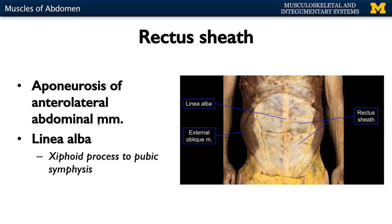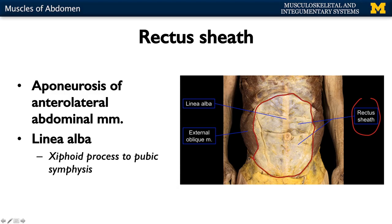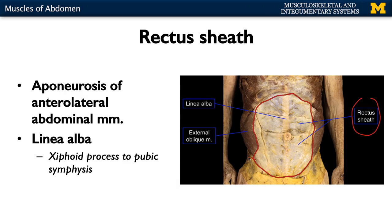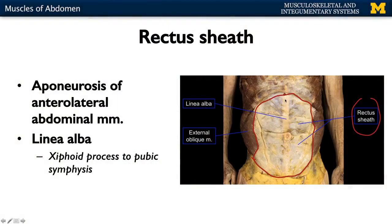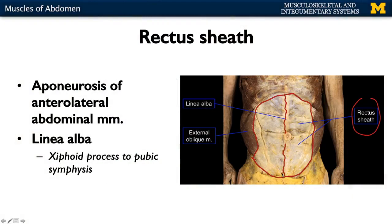All those muscles have tendons associated with them, and those tendons coalesce anteriorly into the very thick, very important rectus sheath. All the white portions you see here are components of your rectus sheath, covering the superficial portion of your anterior abdomen — all these tendons interlacing in this region.